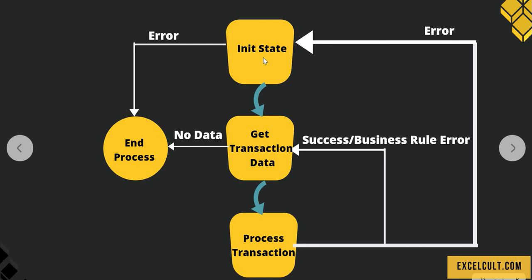If it was successful after retrying, it will move towards GetTransactionData and from there to ProcessTransaction. But if it's a business rule error, we can't do anything about that because it is something we already know will occur. So we will just move on to the next transaction, leaving that particular transaction behind.